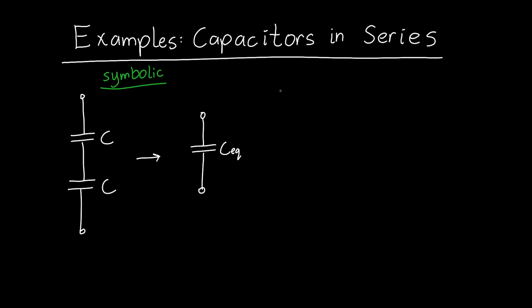So we know that in general for series capacitors one over the equivalent capacitance is equal to one over C1 plus one over C2. And if there's C3 it would be one over C3, one over C4 and so on.